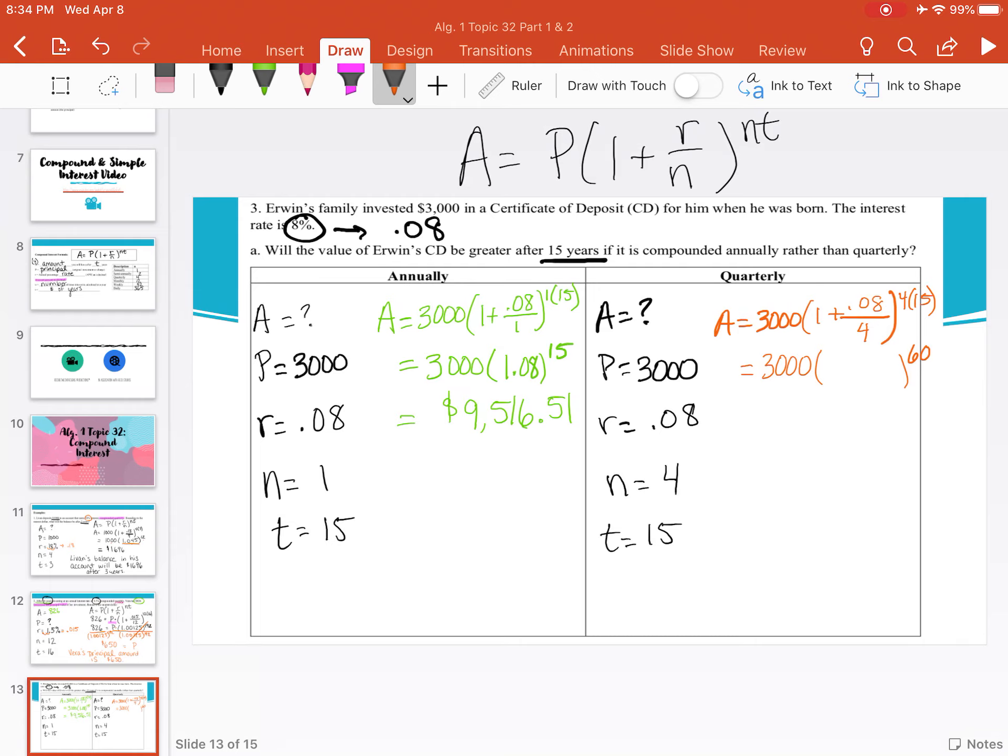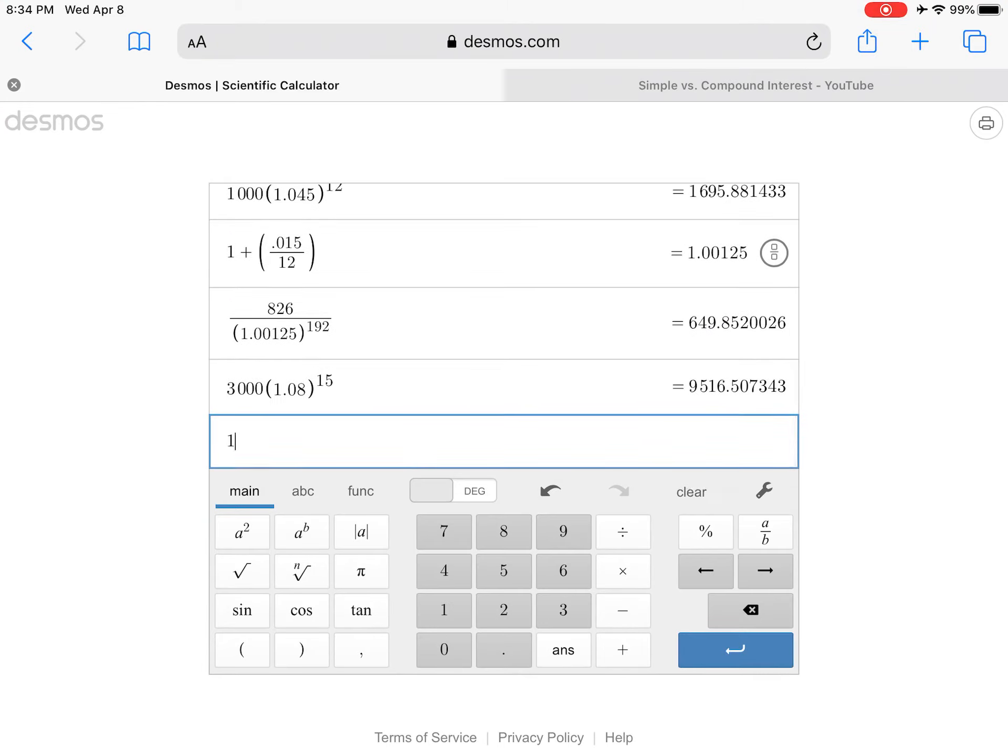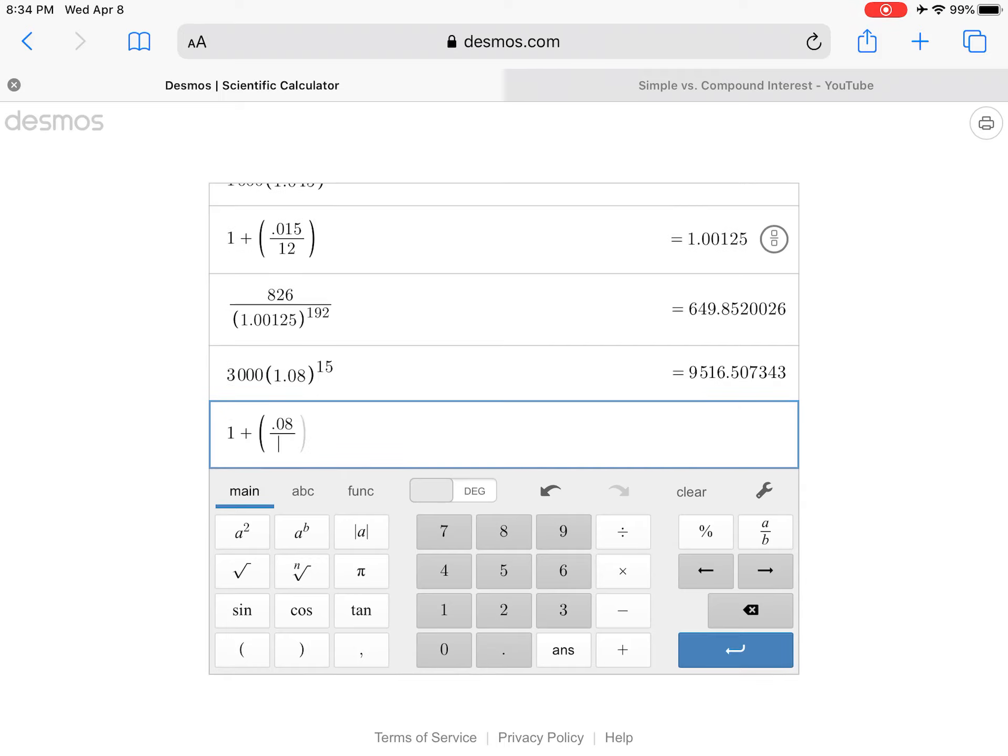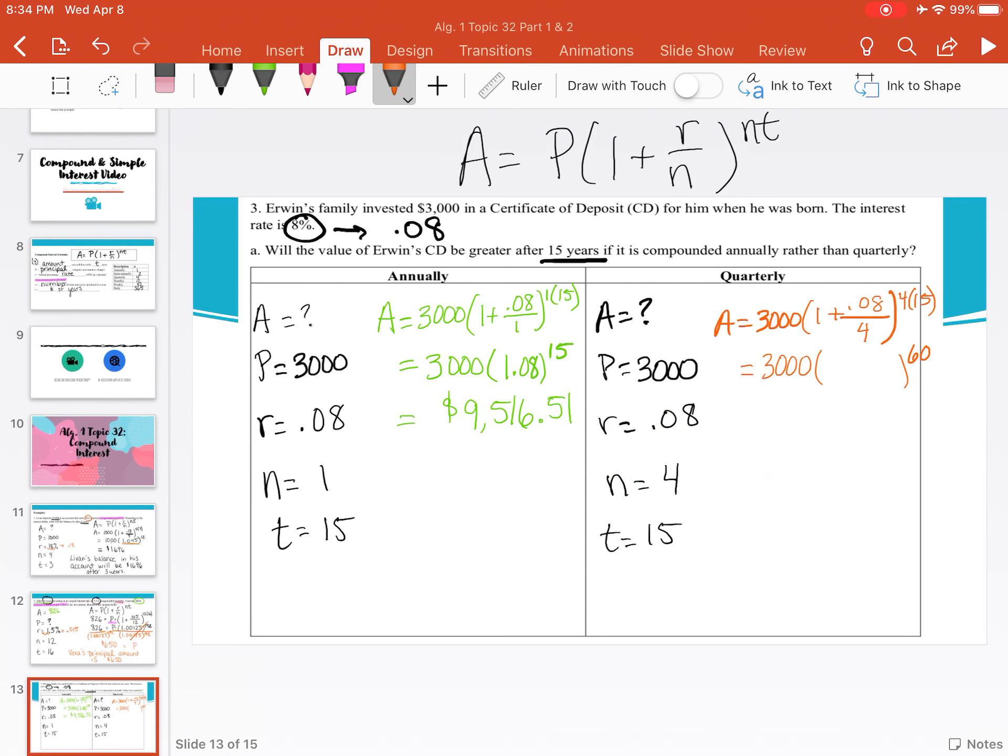Now thinking about our parentheses here, I'm going to go over to Desmos. We have 1 plus, I'm going to use my parentheses again, 0.08 divided by 4. And we get 1.02. So in my parentheses, 1.02.